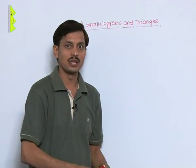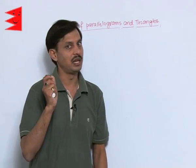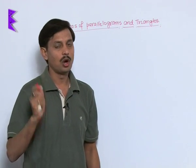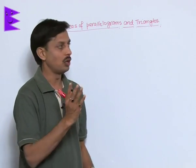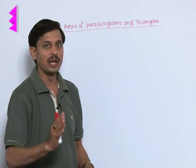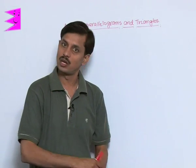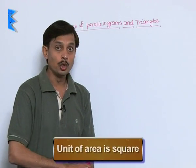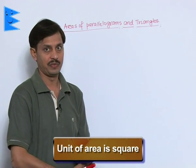So for that, first you know what is area. Area is the surface occupied by any object on the plane, board or plane surface. Number one, its unit is square.